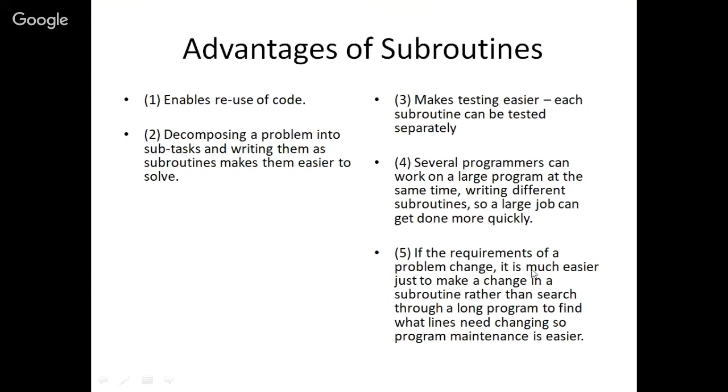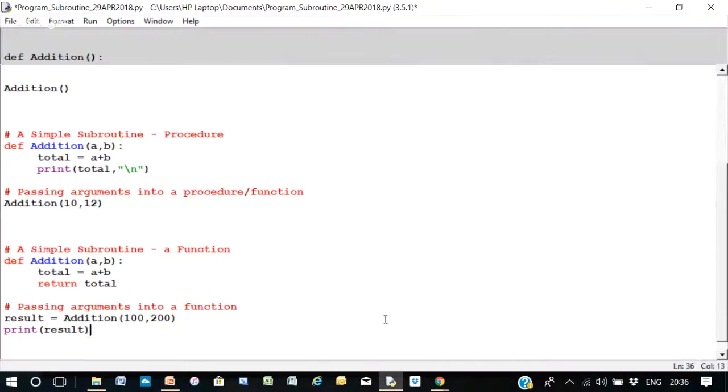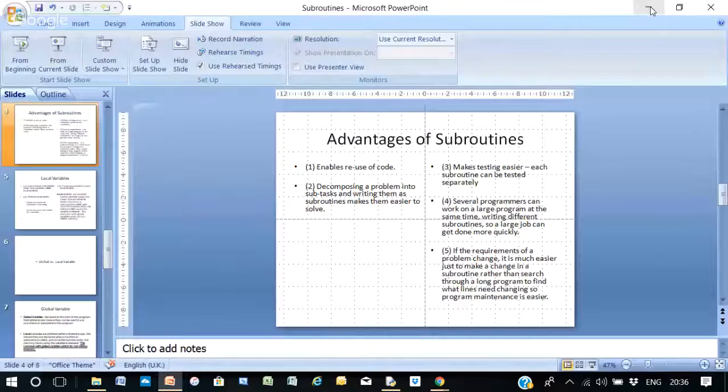And five, if the requirements of a problem change, it is much easier just to make a change in a subroutine rather than search through a long program to find what lines need changing. So program maintenance is easy. So what you have in a program is you can have lots of subroutines each dedicated to a particular task. So you have a big problem to solve or a big program to write, and you decompose it into subroutines and tasks which you then allocate a subroutine for each task.